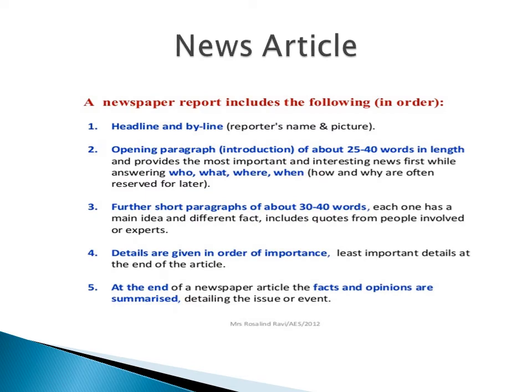A newspaper report includes the following, and they should be in order. One, headline and byline — it contains the reporter's name and picture. Opening paragraph, or the introduction, of about 25 to 40 words in length, and provides the most important and interesting news first while answering who, what, where, and when.